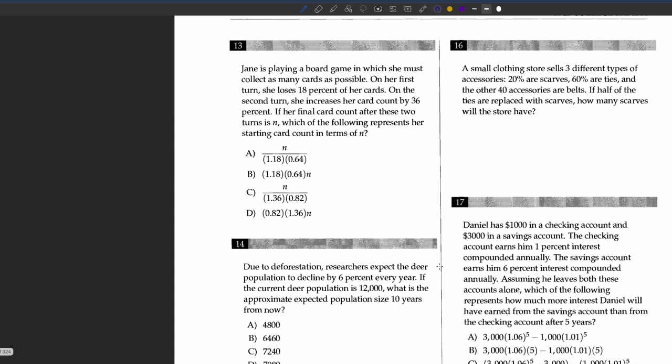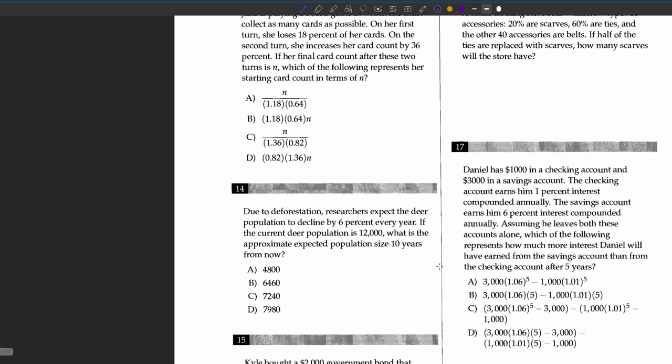Question 14: Due to deforestation, researchers expect the deer population to decline by 6 percent every year. If the current population is 12,000, what is the approximate expected population size 10 years from now? We use the formula: initial population times 0.94 to the power of 10 years. We get about 6,460, so b is the answer.